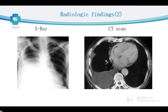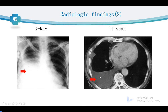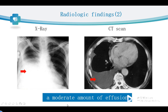Now let's look at another two pictures. The first one is an x-ray. We can find some abnormal density opacity in the right lower lungs — it's the pleural effusion. In the CT scan, we can also find pleural effusion in the right thorax. Those are moderate amounts of effusion. Please notice that the trachea has been compressed to the unaffected side.